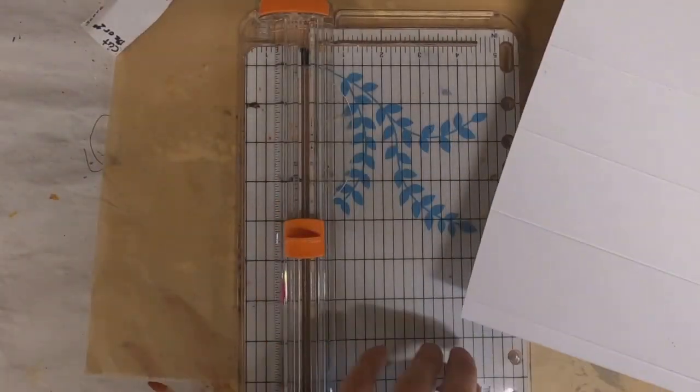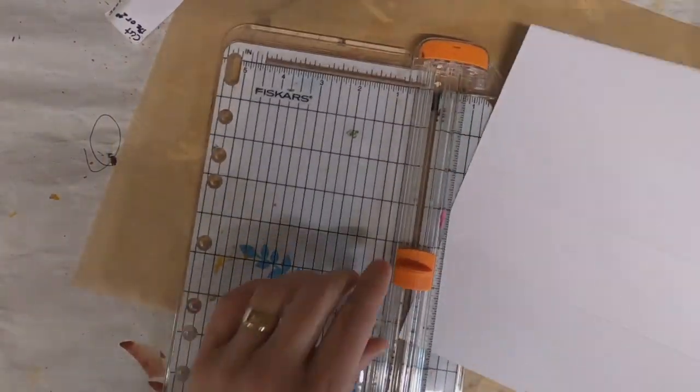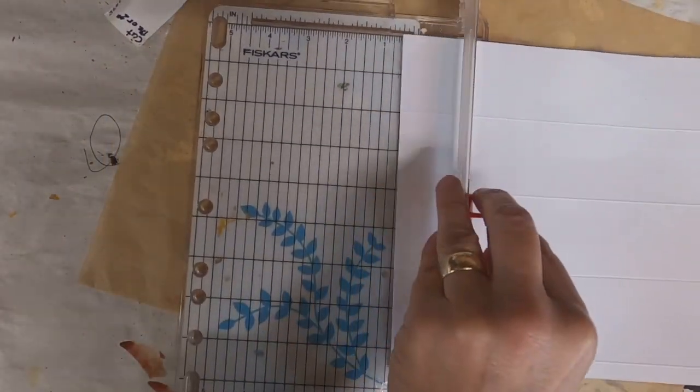So now that I have the scores, I'm going to pull out my trimmer and I'm going to trim it at one and a half inches. This will be one paper clip.